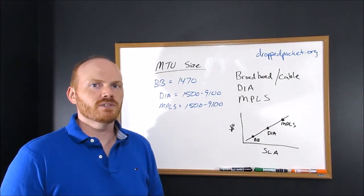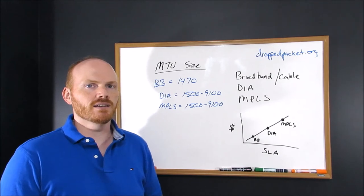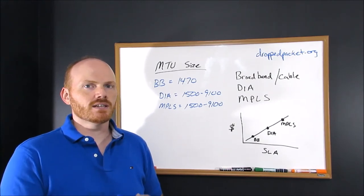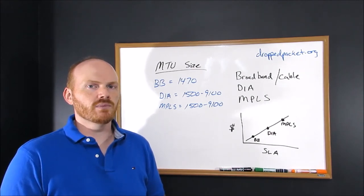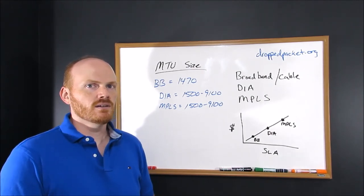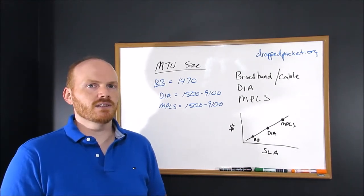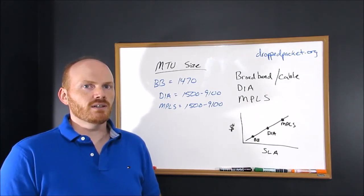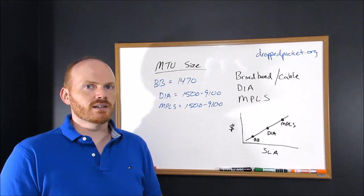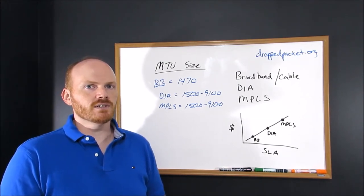Another thing to keep in mind is MTU size. If you have any legacy applications that can't accept fragmented packets or frames, you're going to want to keep this in mind. You're especially going to want to test these applications in a lab environment before rolling out broadband enterprise-wide. So a few numbers to keep in mind. With broadband, you're typically going to get 1470, sometimes even less, available MTU size. DIA and MPLS are going to use traditional ethernet access methods, which would give you the typical 1500 up to 9100.